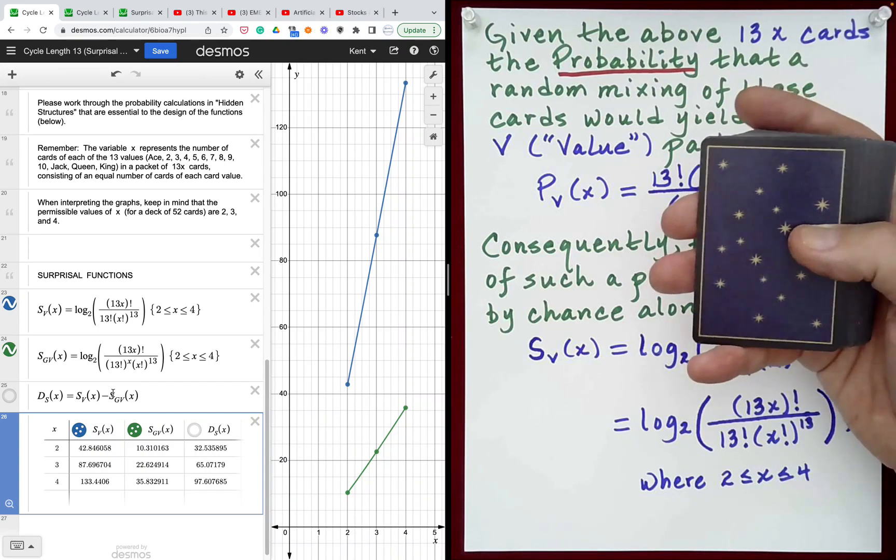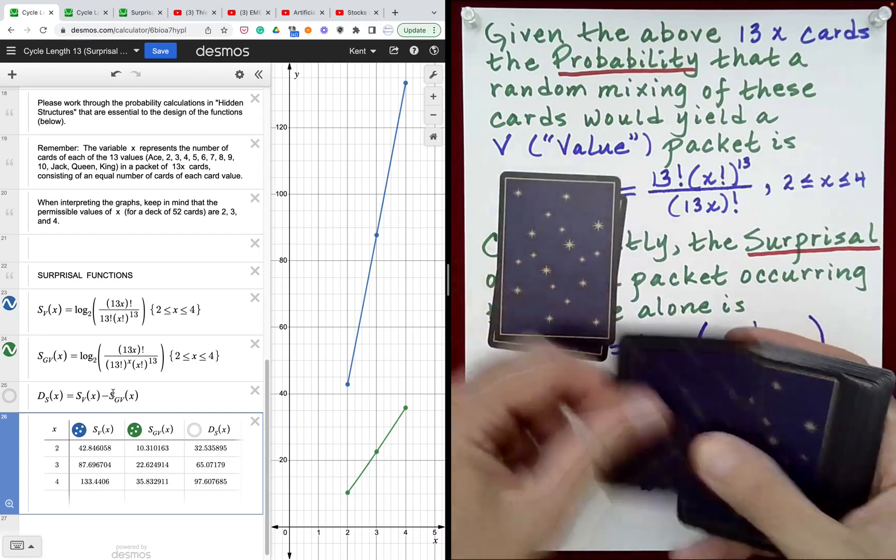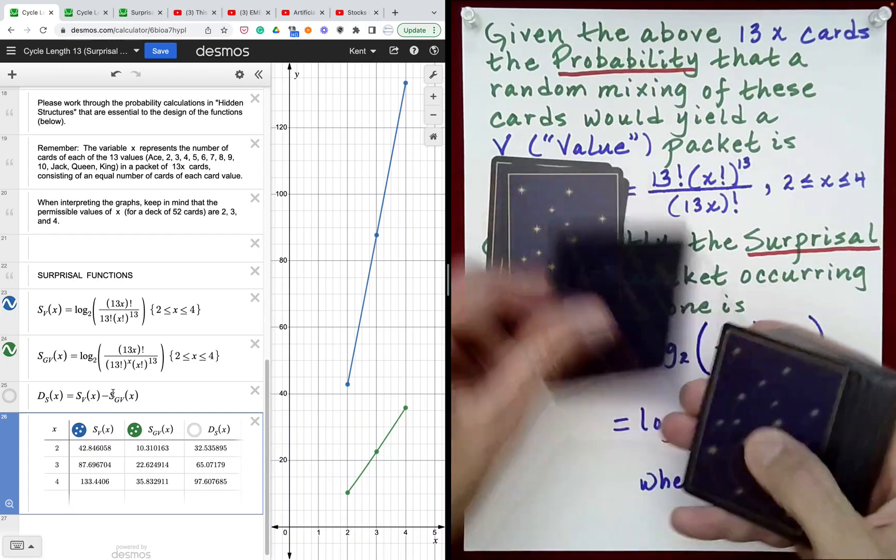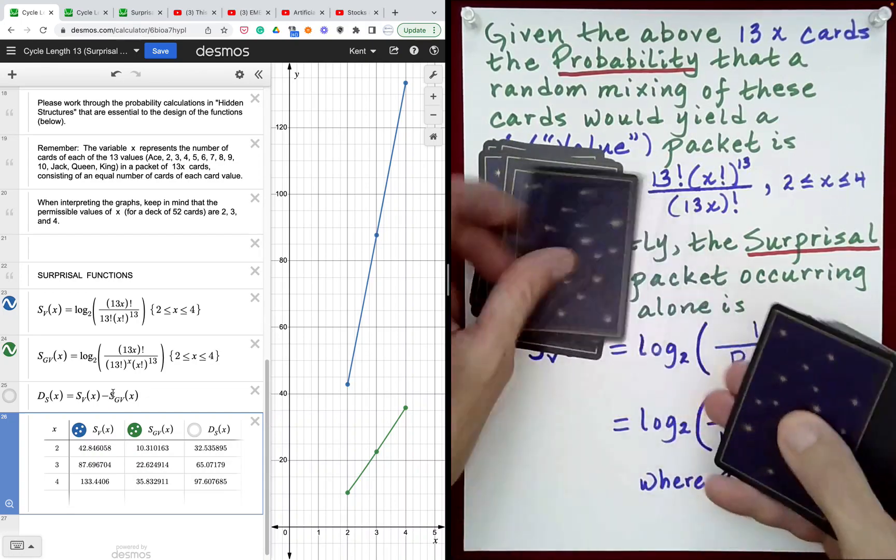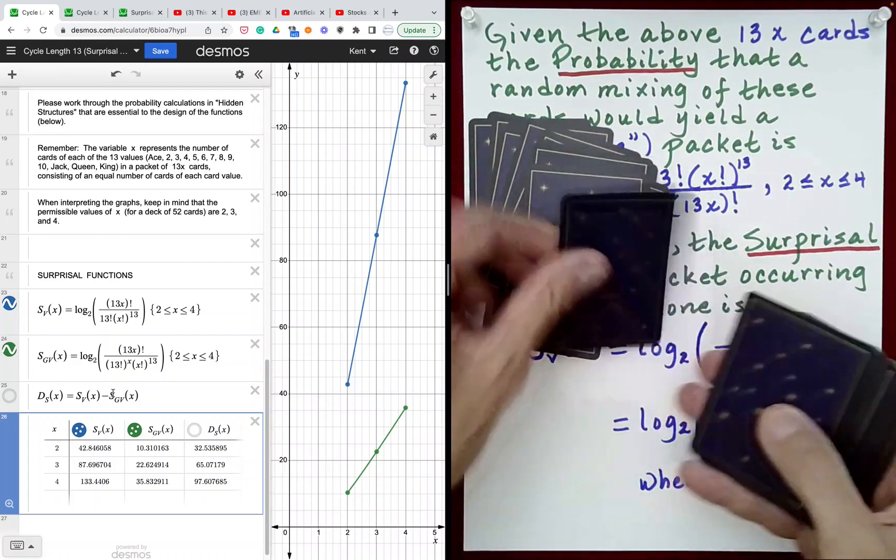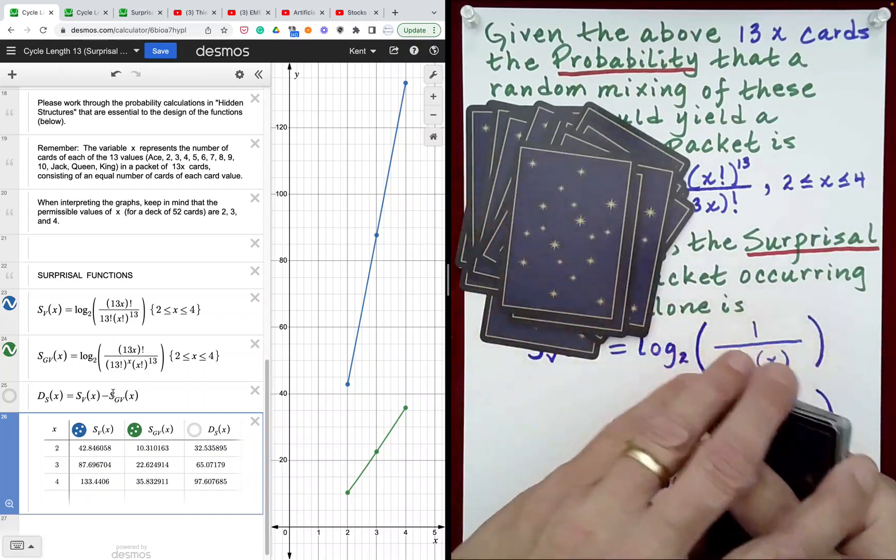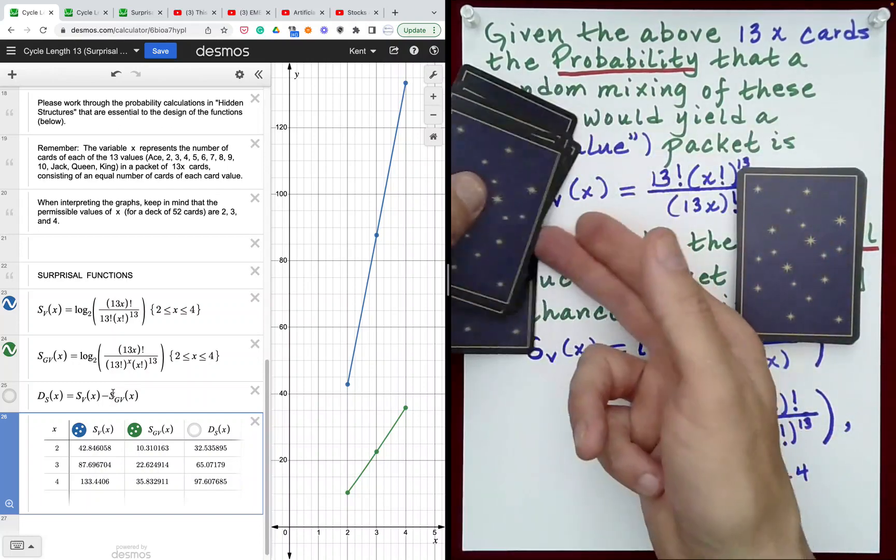The Gilbreth shuffle always begins with dealing out any number of cards. This can be dictated by the spectator. The spectator can tell you when to stop dealing. It really is a free choice. When they say stop, go ahead and stop dealing, and then we'll have two portions of the deck.